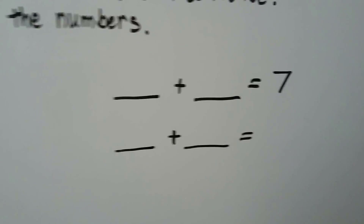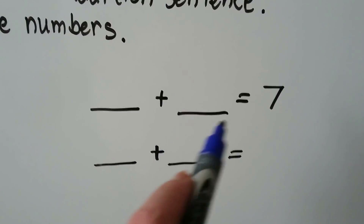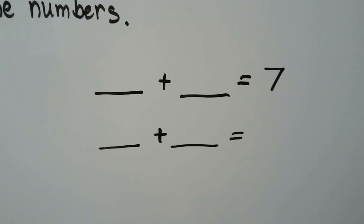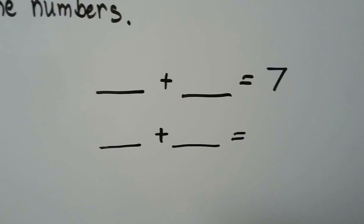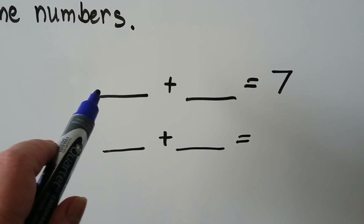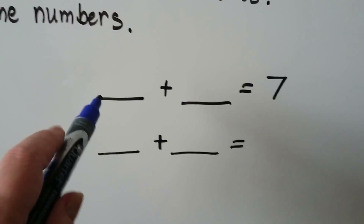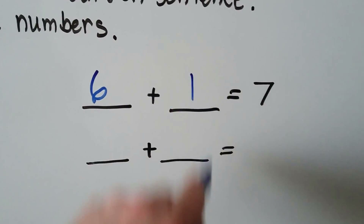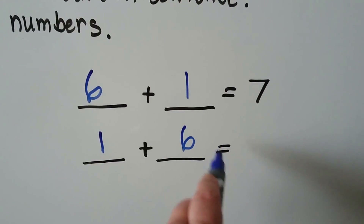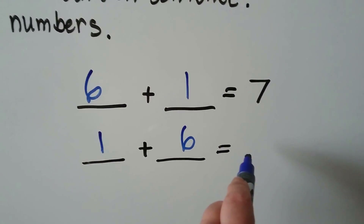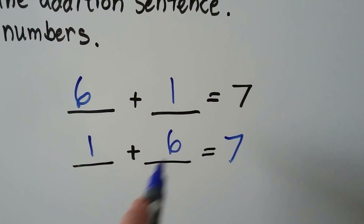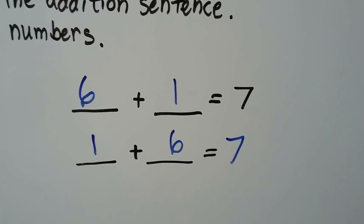Let's try it again. A number plus another number equals 7. What numbers can we pick that will equal 7? We could use 6 plus 1, 5 plus 2, or 3 plus 4 — they all equal 7. Let's use 6 and 1. If we change the order, the 1 goes here and the 6 goes here. If you said 7, you're right — because if we change the order, the sum stays the same when we add.